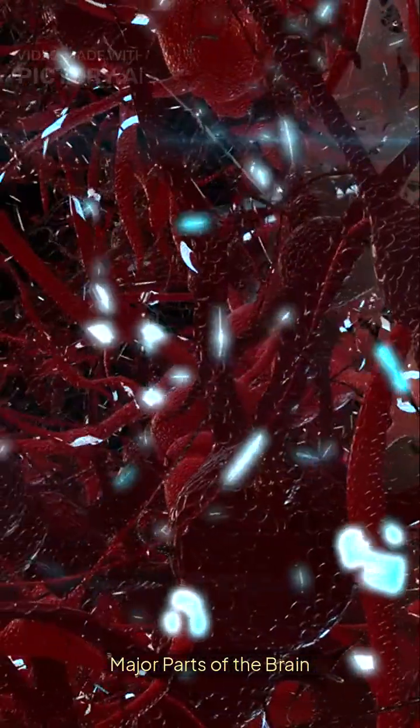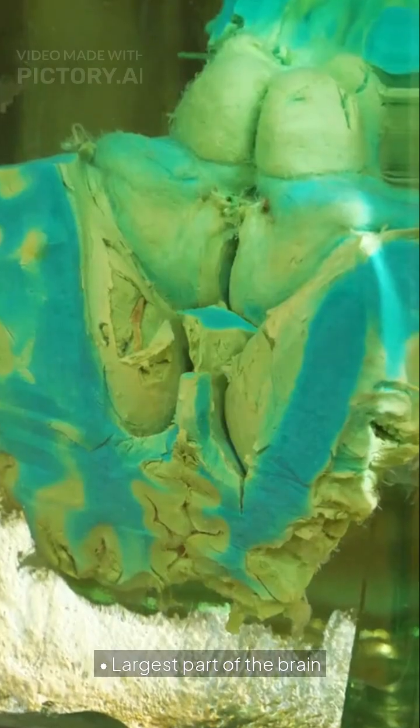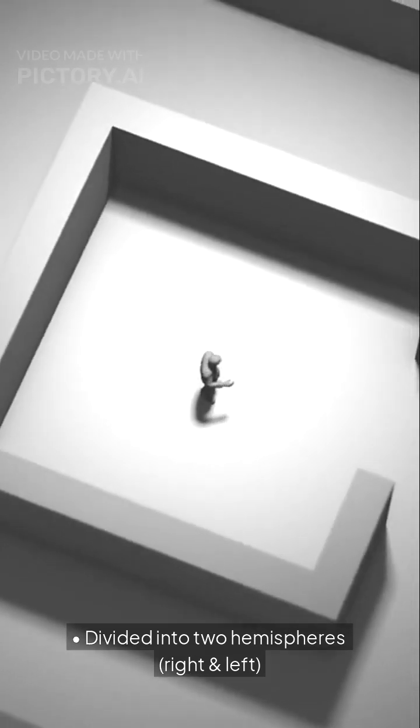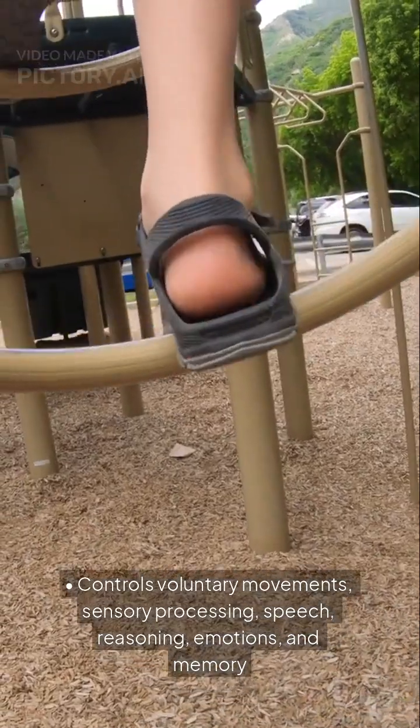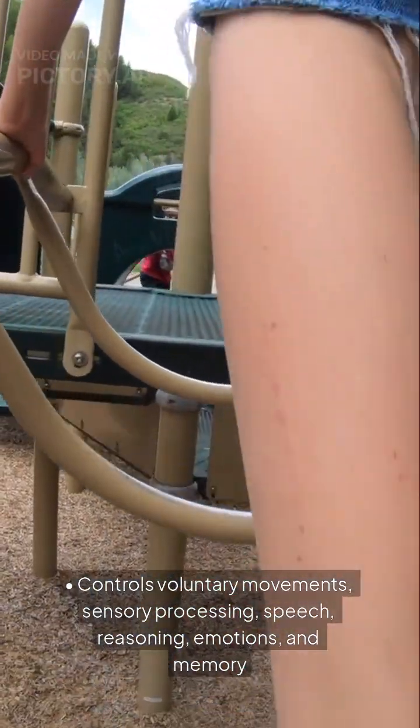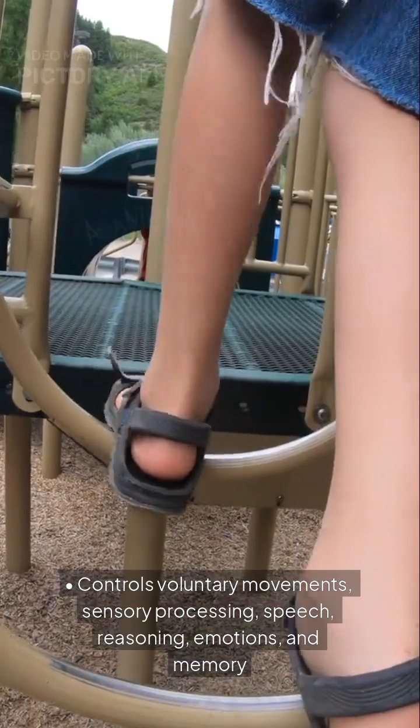Major parts of the brain include the cerebrum, the largest part, divided into two hemispheres, right and left. It controls voluntary movements, sensory processing, speech, reasoning, emotions, and memory.